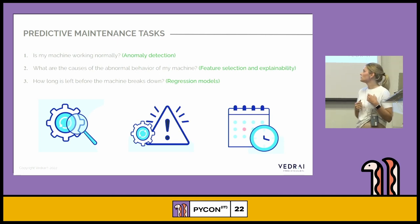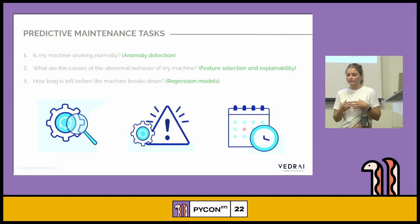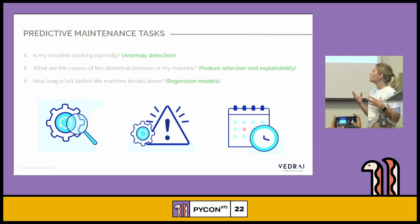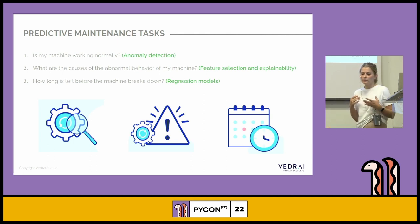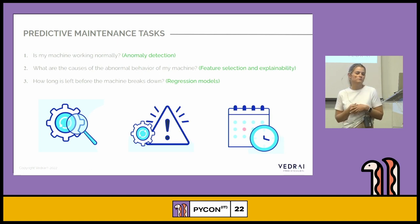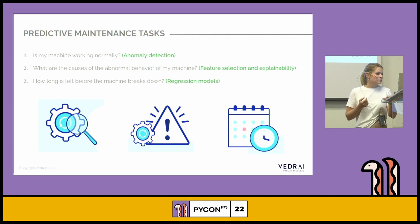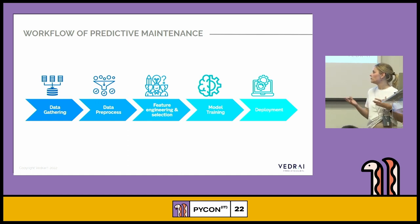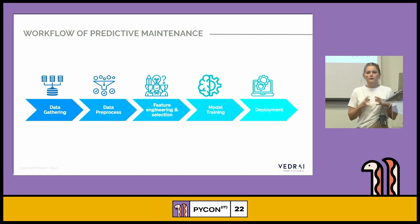Once we detect abnormal behavior, the second question is: what are the causes of this abnormal behavior? Here we can apply feature selection algorithms or explainability methods. The third question is: how long is left before the machine breaks down? In this case we can model regression models to estimate the remaining useful life. The workflow is quite standard: gather data, process it, do feature selection and engineering, train the model, and deploy.